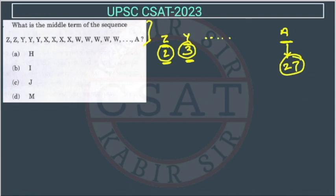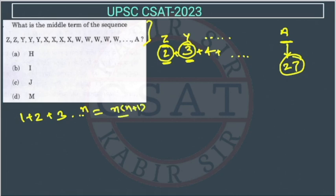So total how many letters will there be? It will be 2 plus 3 plus 4 plus 5, keeping going on, with the last term being 27. This is equal to 1 plus 2 plus 3 and so on — the summation of n natural numbers is n(n+1)/2. Here 1 is missing but we will subtract it at the end, so we can assume 1 initially.